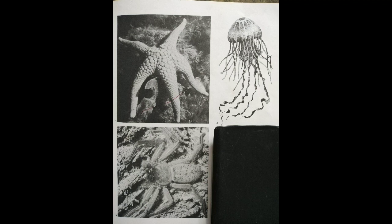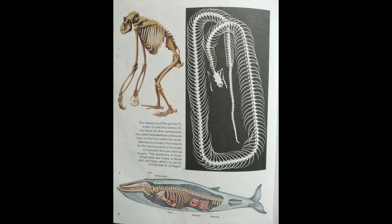The skeleton of the gorilla, snake, and blue whale, like those of other vertebrates, are called endoskeletons because they are formed within the body. Skeletons provide a framework for the moving parts of the body and protect delicate internal organs. The skeletons of most vertebrates are made of bone and cartilage, which is partly composed of collagen.